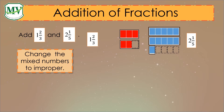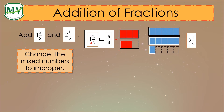Whenever it's a mixed number, you need to convert it to improper fraction. To express a mixed number into an improper fraction, we need to multiply the denominator by the whole number then add the numerator. So, 1 and 2 over 3: 3 times 1 plus 2 equals 5, then copy the denominator 3, giving 5 over 3. The same applies to 2 and 1 over 5: 5 times 2 plus 1 equals 11 over 5.